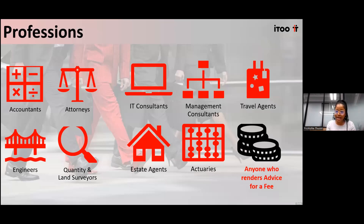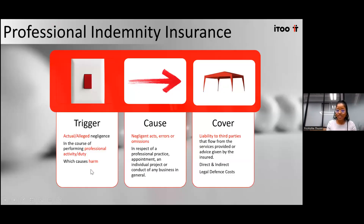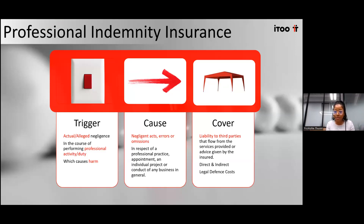The list of professions is endless. Anyone who renders advice for a fee can obtain a professional indemnity policy. The trigger to our policy would be any actual or alleged negligence in the course of the professional performing their duties which might cause any harm or damage to the third party. The cause would generally be any negligent acts, errors and omissions, and where they could actually make errors, misjudgment and any misrepresentation.